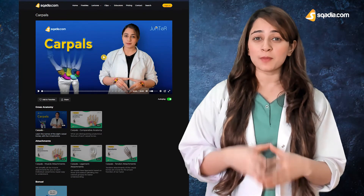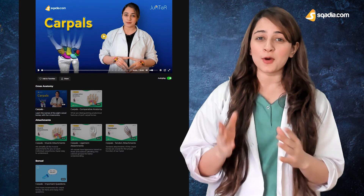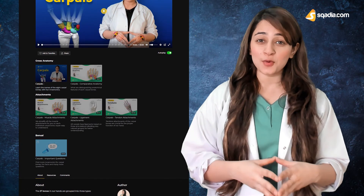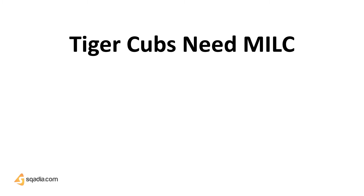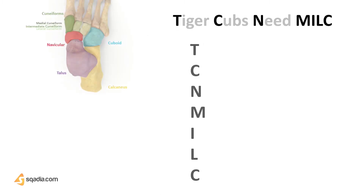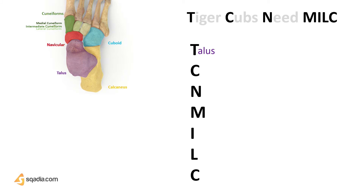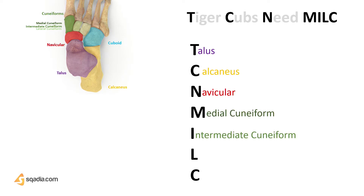Remember the other lecture about the carpal bones? I had told you the mnemonic to memorize the carpal bones — you can go and check out that lecture. Coming back to the tarsal bones, we have a mnemonic to memorize them as well. The mnemonic is: Tiger Cubs Need Milk. Where T stands for talus, C for calcaneus, N for navicular, M for the medial cuneiform, I for the intermediate cuneiform, L for the lateral cuneiform, and the final C for the cuboid bone.